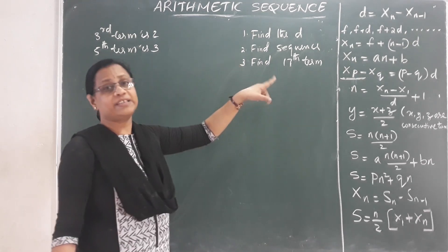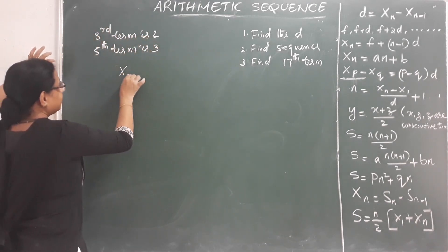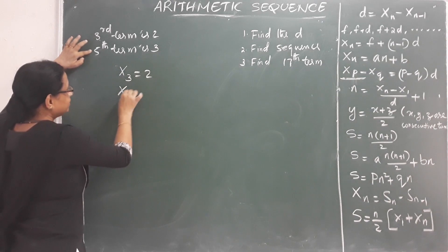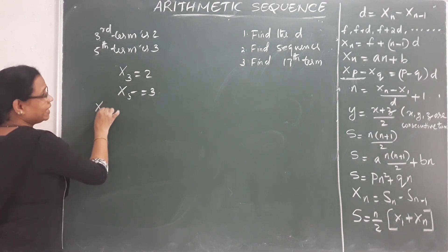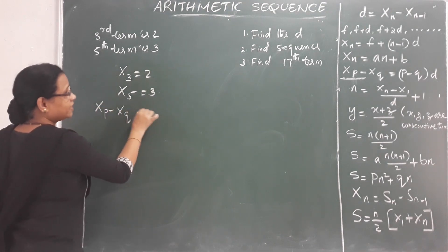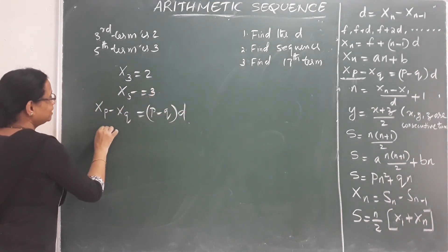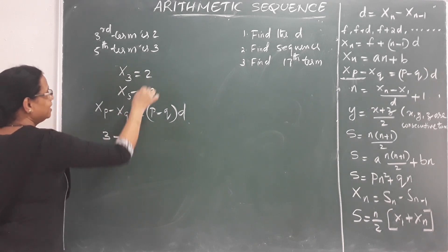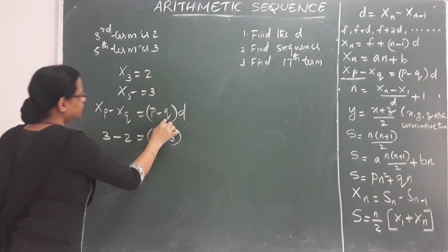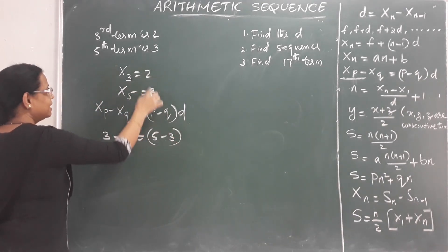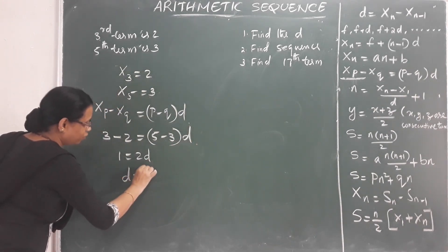Third question: find the 17th term, given that the third term is 2 and the fifth term is 3. Using the formula xp minus xq equals (p minus q) into d: x5 minus x3 equals (5 minus 3) into d, so 3 minus 2 equals 2d, giving d equals 1 by 2.